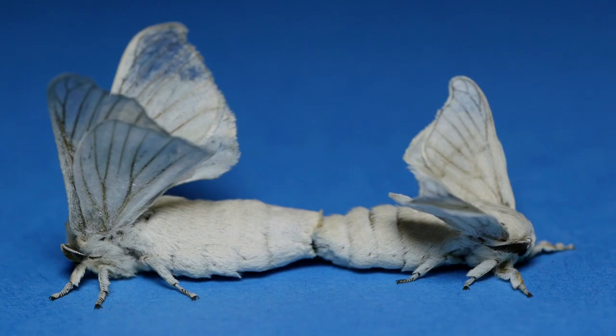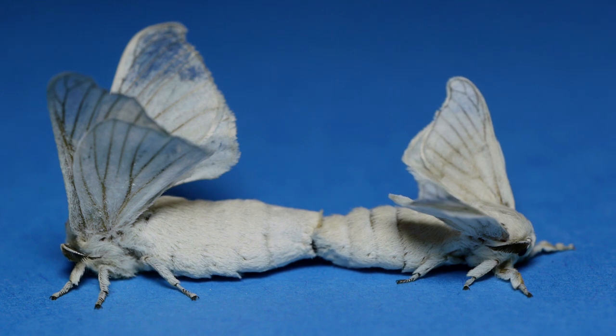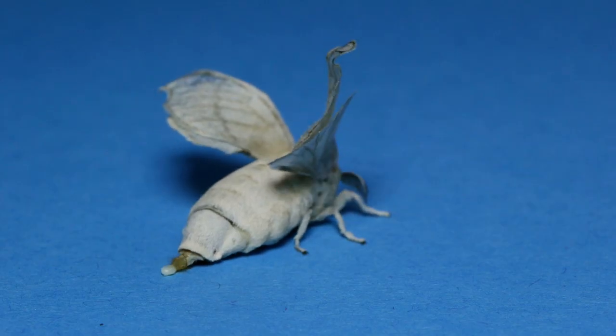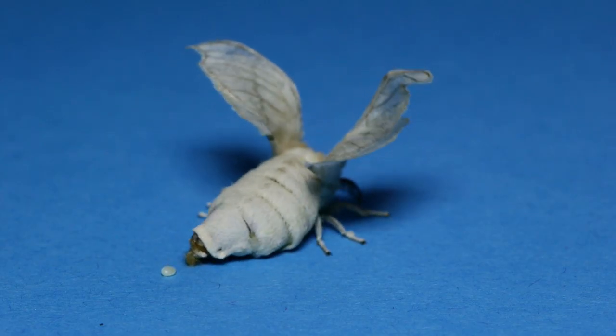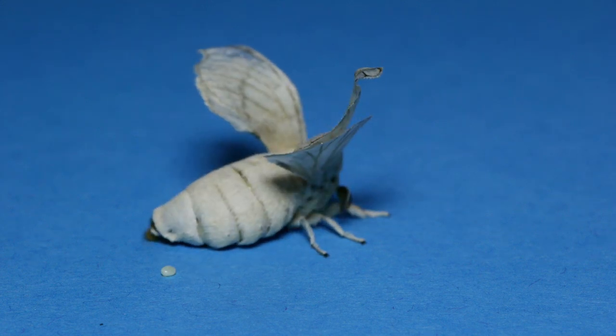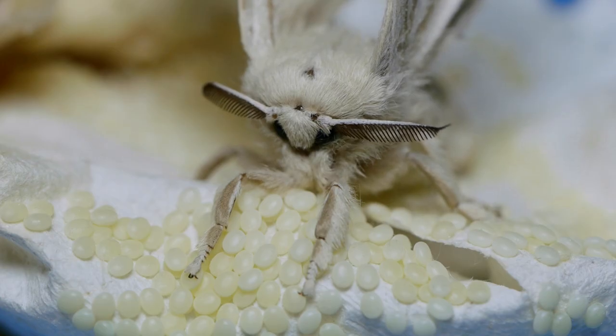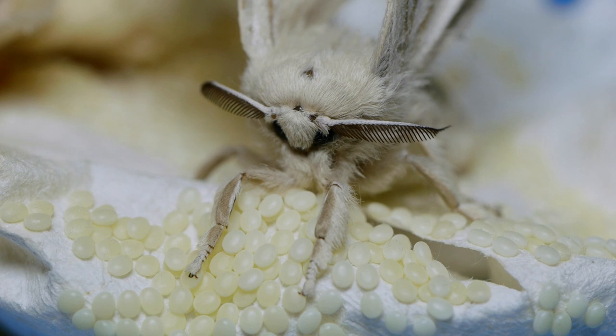These sex pheromone receptors play a very important role in the evolution of new species because they act as a barrier to mating. For that reason, selection has been acting very strongly on this gene family. By better understanding the molecular genetic mechanisms and how they've evolved, this will provide us more broad insights into how genes and genomes evolve and interact with the environment.